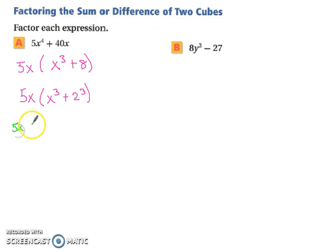So 5x still chills on the outside. So now we have our x plus 2, a plus b. And then we have our a squared minus a times b plus 2 squared, our b squared. If you want, you can simplify this. So we end with 5x times x plus 2 times x squared minus 2x plus 4.